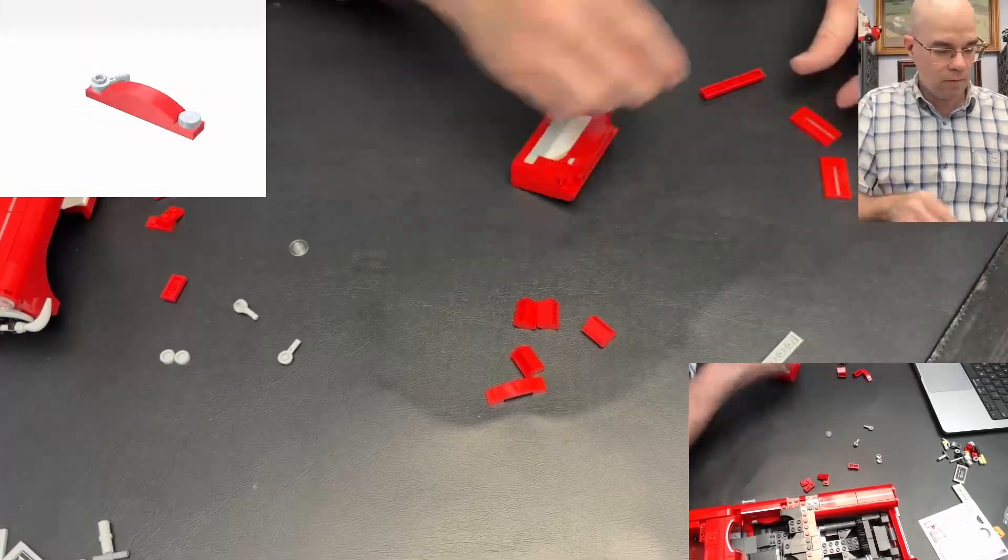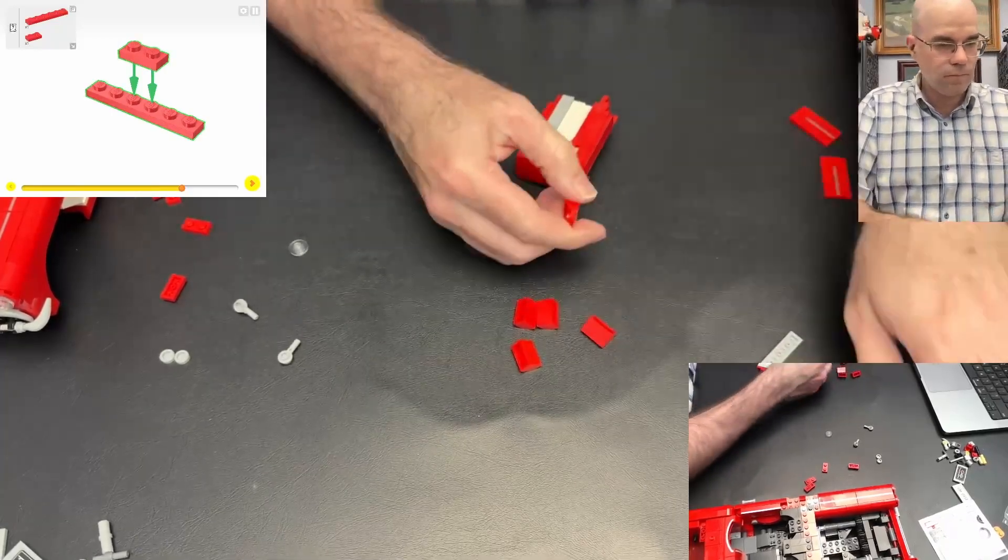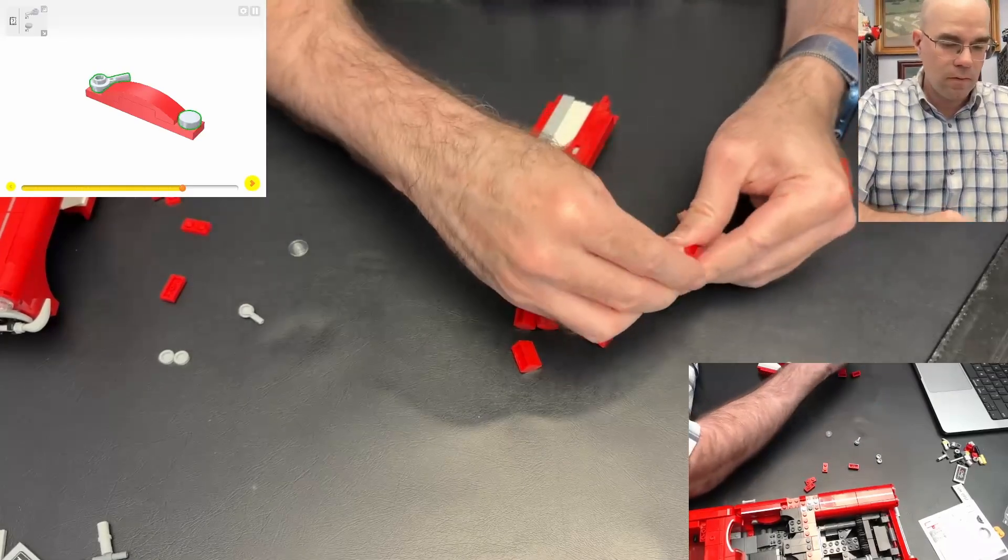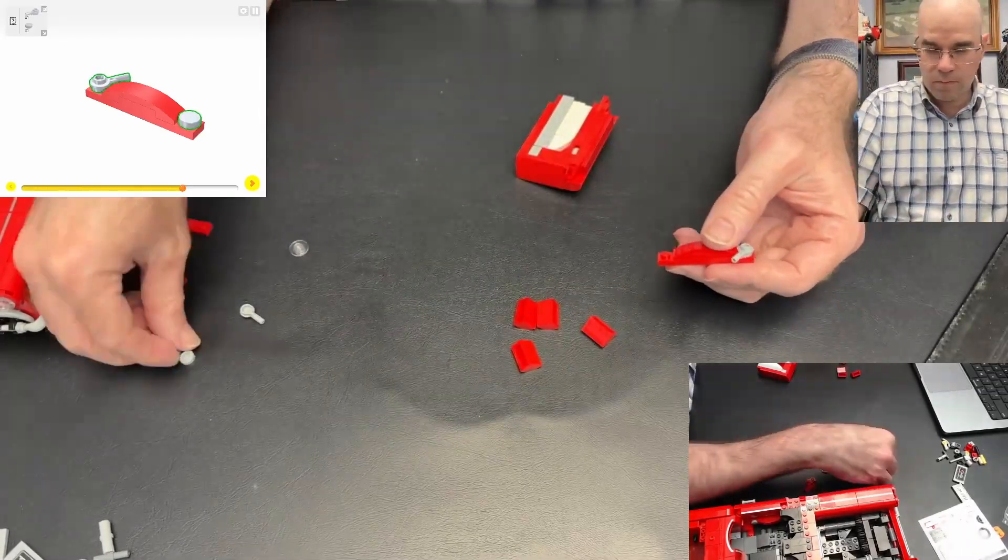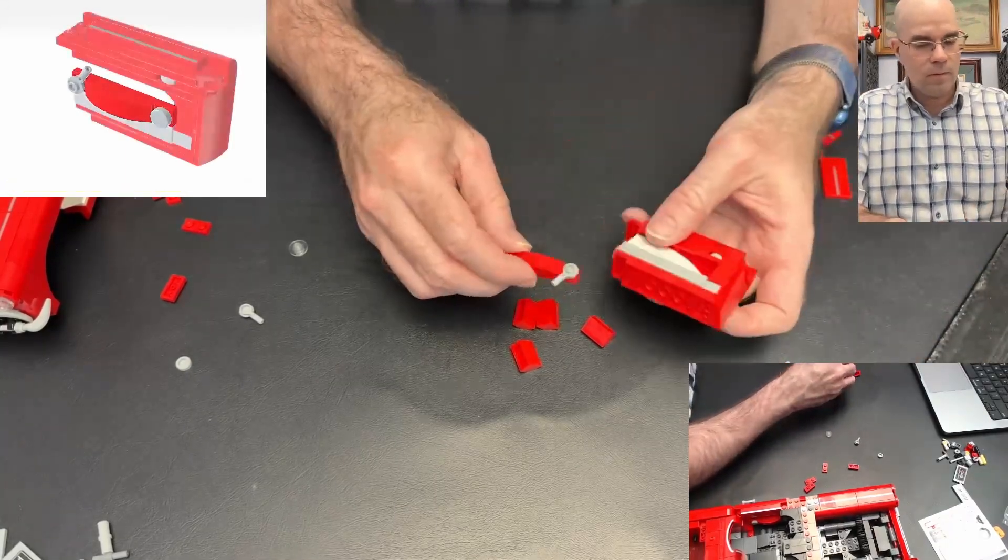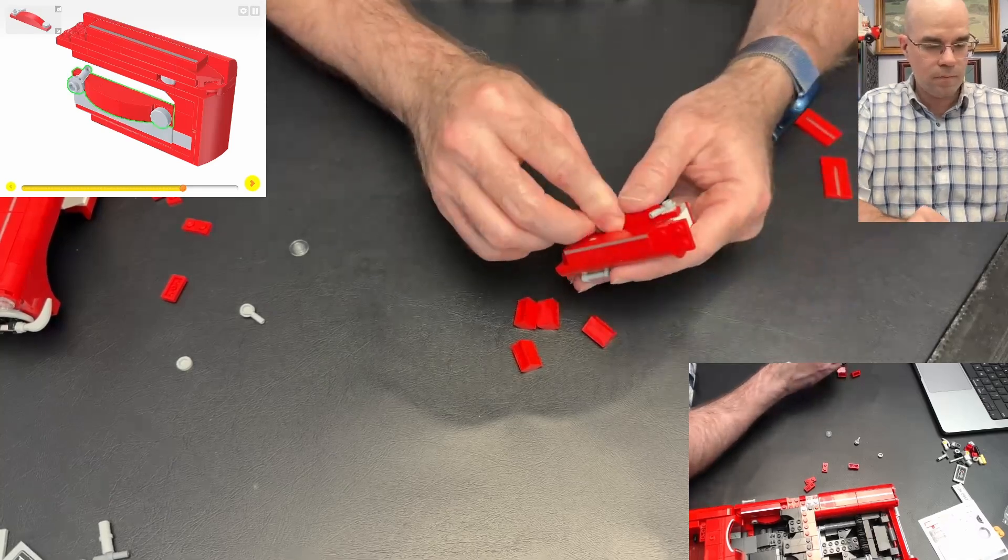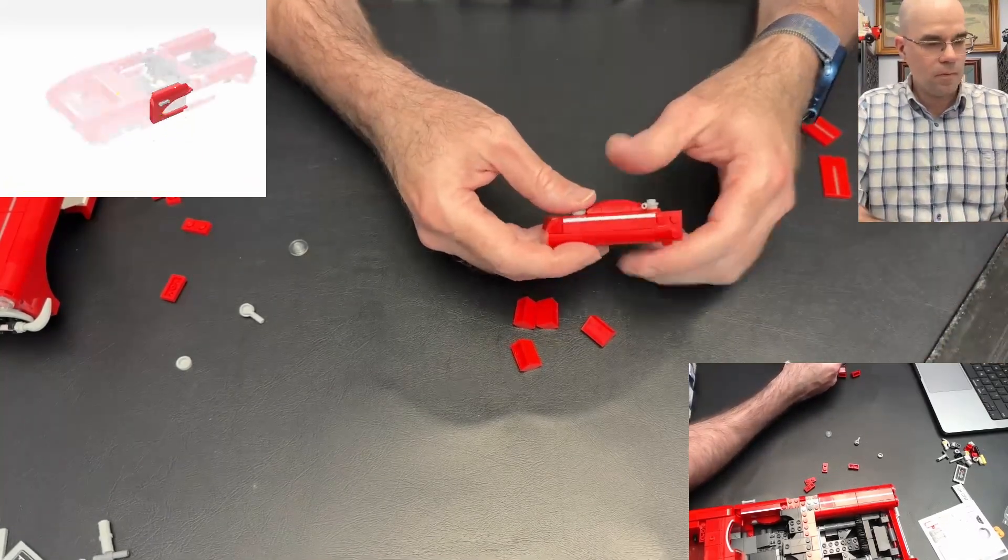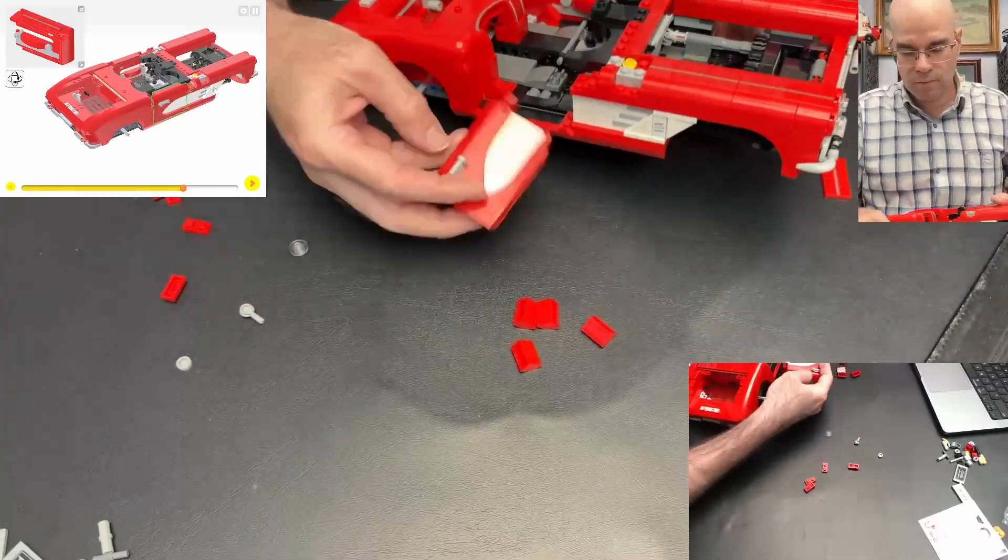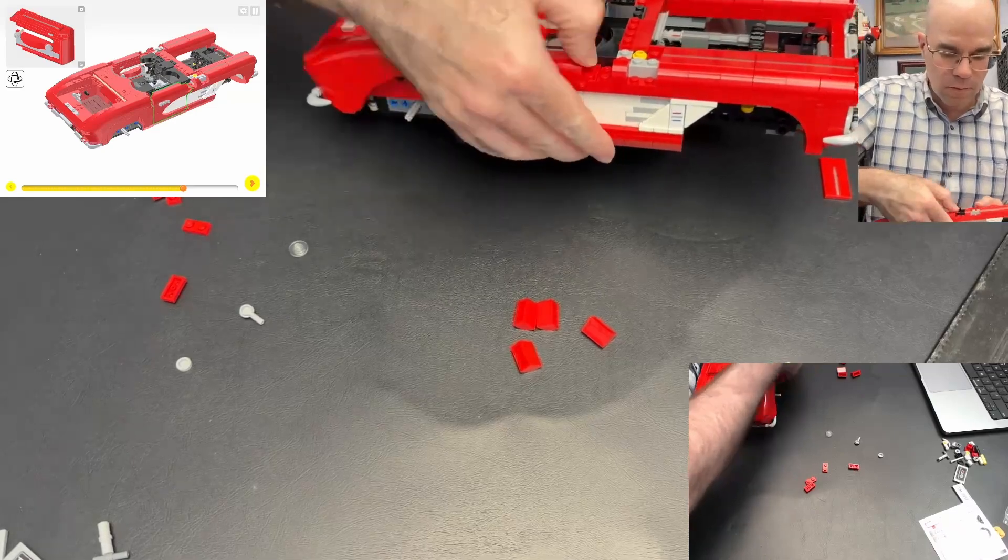And that hinge goes like that, and all these curved slopes. Okay, that goes there. Snap that a little together a little better. There we go.